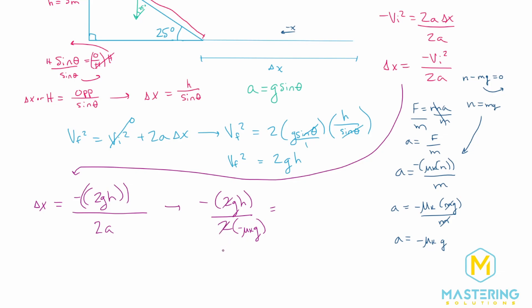We have 2 on the top and the bottom, so that goes away. We have gravity on the top and the bottom, so that goes away. And we have a negative divided by a negative, so it just turns into a positive. So what we end up with is the height divided by the mu sub k.